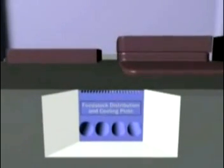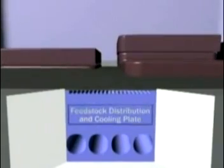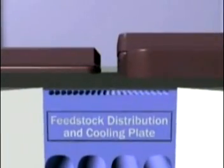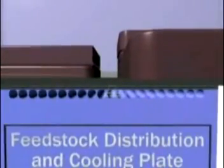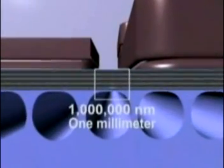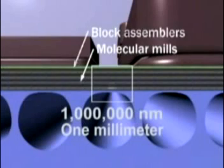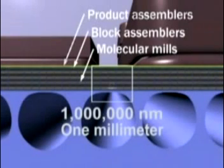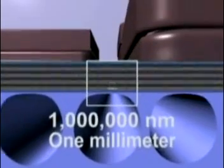Near the top surface is the productive machinery itself, organized into layers. Machines in the lowest layer process molecules into building blocks, passing them upward to machines that assemble them into larger components, and then to machines that add these components to the product. From a millimeter scale, 1 million nanometers...